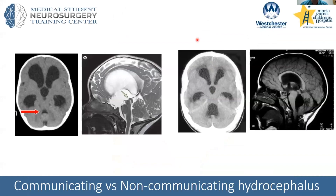With that knowledge, we can talk more about hydrocephalus. A very important concept is communicating versus non-communicating hydrocephalus. Think of a river — if you build a dam, fluid builds up upstream. Similarly, if the aqueduct is very narrow, you'll see a buildup of fluid upstream, with enlargement of the lateral ventricles and the third ventricle, while the fourth ventricle remains small.